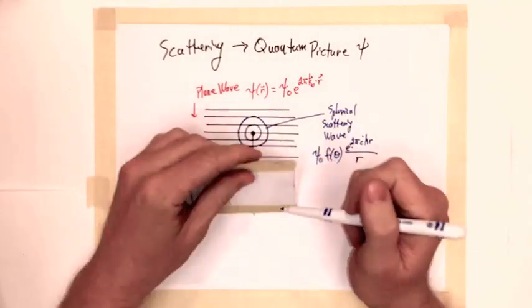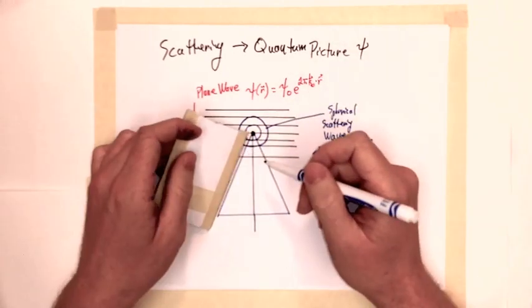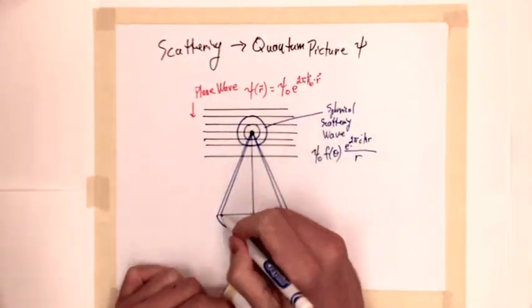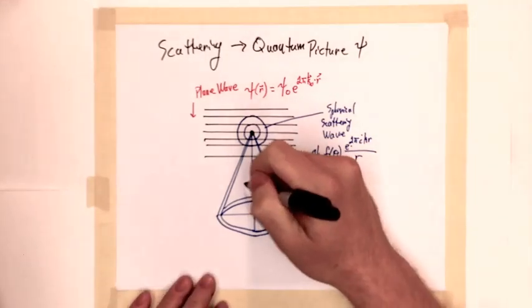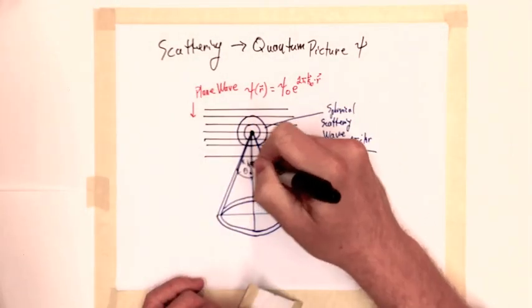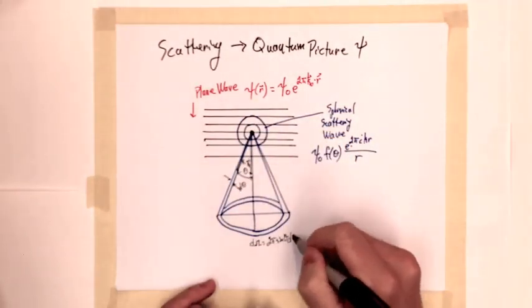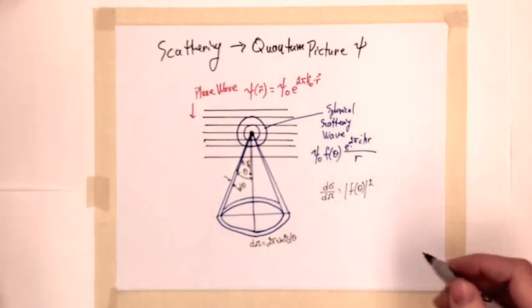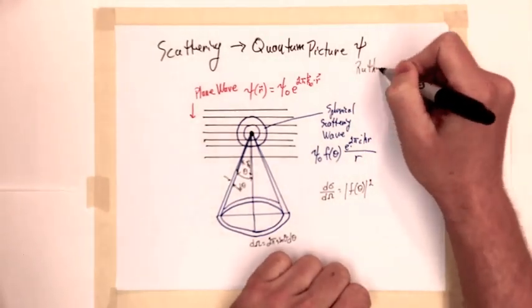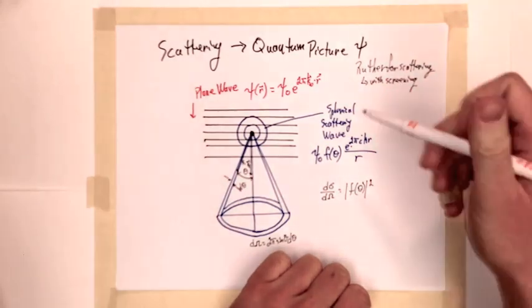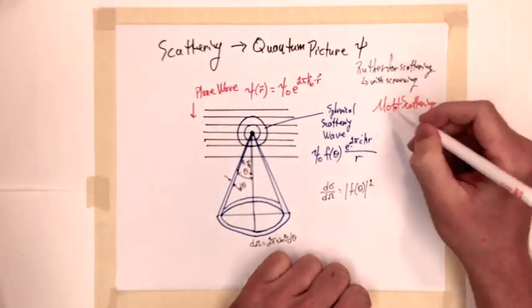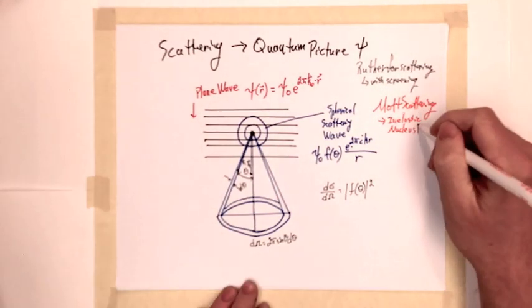These additional inelastic scattering processes are fully accounted for in Mott scattering. In a wave mechanics picture, we should view the primary electron beam as a plane wave which creates a scattered spherical wave. The scattered wave picks up a phase shift described by the scattering amplitude f of theta, the square of which is related to the differential cross-section.